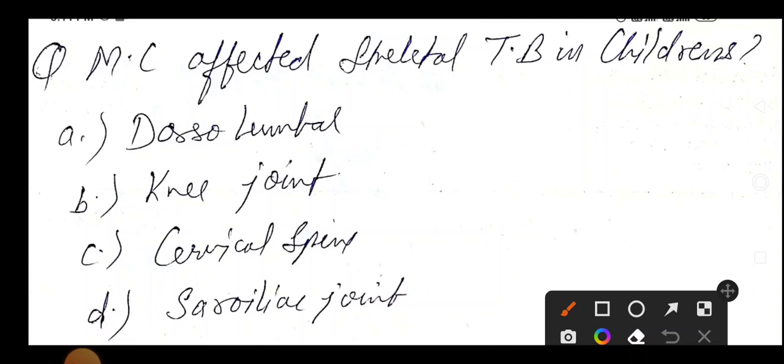Okay, in children, if they ask about adults, then what is your answer? Dorsal lumbar spine. If both are in option, dorsal lumbar, then choose thoracic spine.